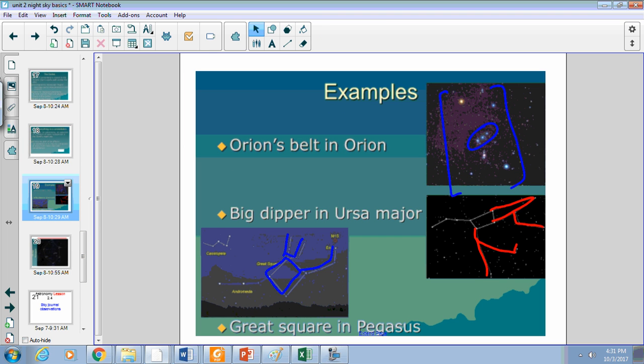So the Big Dipper is not a constellation; it's part of a constellation known as Ursa Major. Orion's belt, shown here, is three stars that make up the belt of Orion. The Big Dipper is part of Ursa Major, the great square in Pegasus. You can find all kinds of patterns - three dots make a triangle, you can find triangles all over the place.